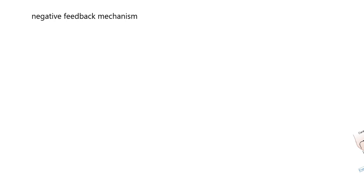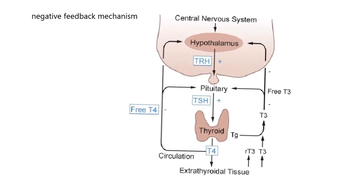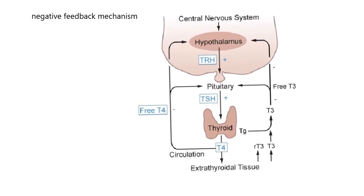Let's look at this diagram since we're talking about thyroid glands. Here we have the hypothalamus. We know it releases thyrotropin-releasing hormone, TRH. The plus sign means it stimulates something downstream.